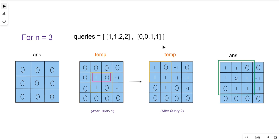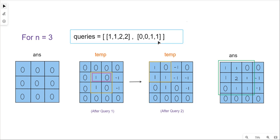For the next query, we apply the same logic: updating the first cell by plus 1 and the cell just after the last cell by minus 1. After query 2, the temp matrix is updated accordingly. Since the second query was the last query in the queries array, we now move on to forming the answer matrix.